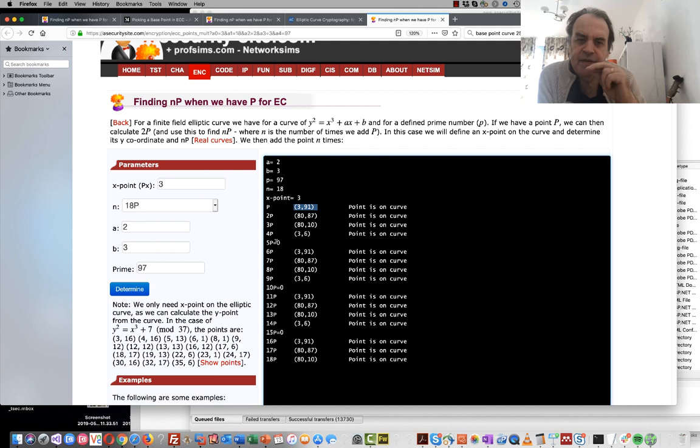Or the point doesn't really exist, and we will go around again and cycle. So there are only really one, two, three points that we can have for our private key before it would repeat again.